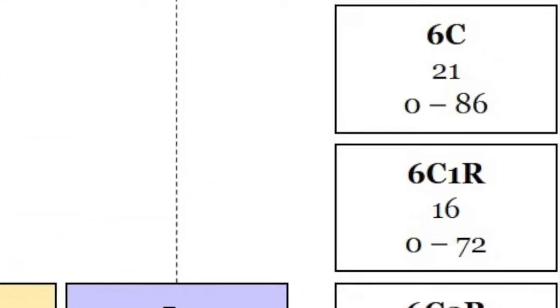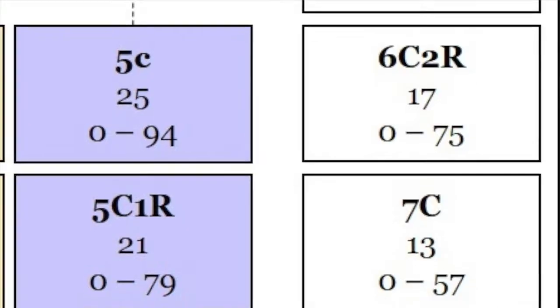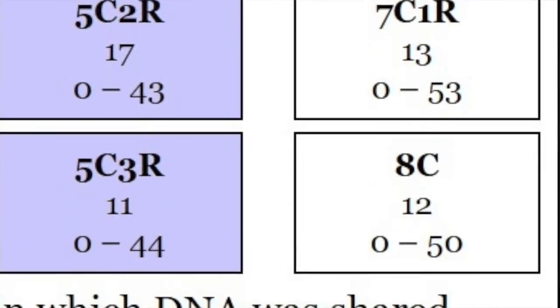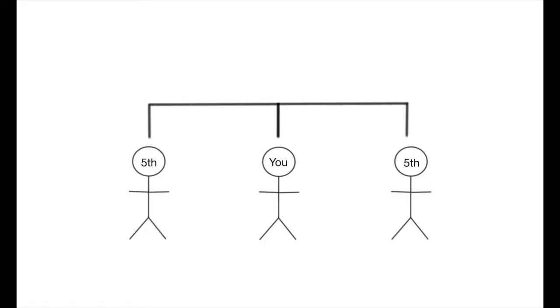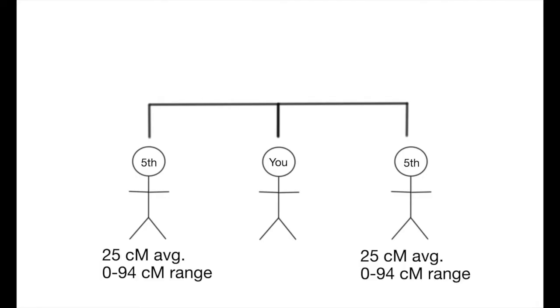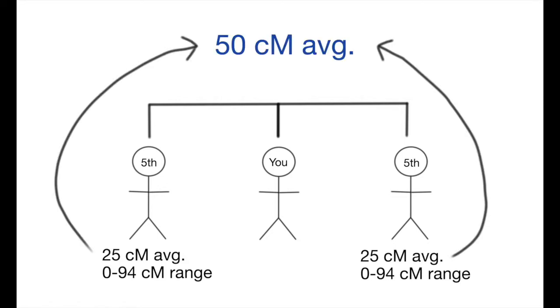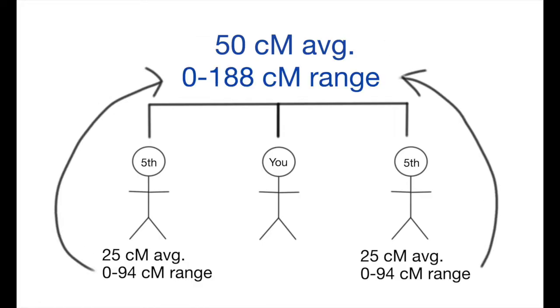For sixth, seventh, and eighth cousins, you can see it gets smaller and smaller. With all of these, there's a possibility that you don't share anything. But let's say that maybe you find someone who's actually a cousin to you two different ways — they're your fifth cousin twice. Being that they're related twice, we can basically double the numbers for the fifth cousin average. So you'd be looking at an average of 50 centimorgans with a range of possibly nothing to almost 190 centimorgans — well over the typical range of a fifth cousin. So this person who is a fifth cousin in two ways will actually come up looking like a third cousin.